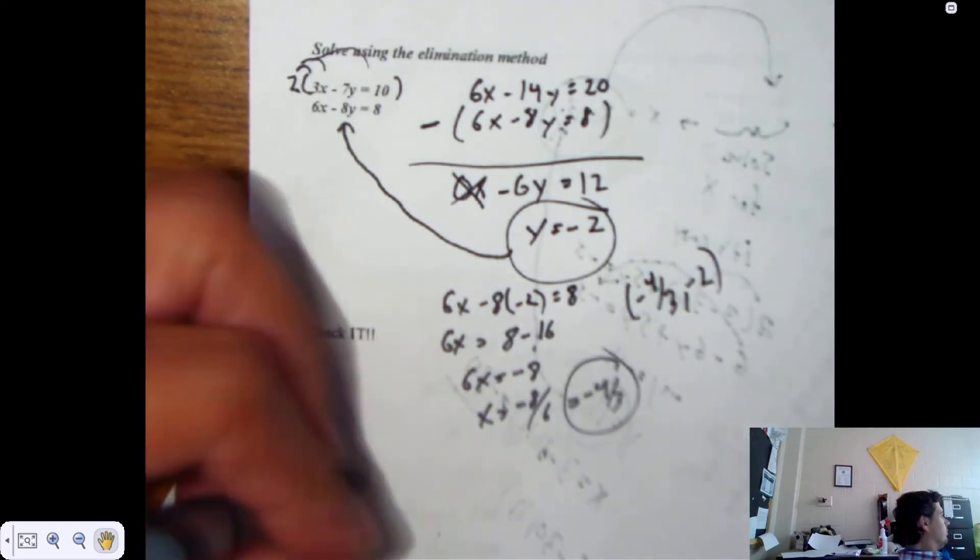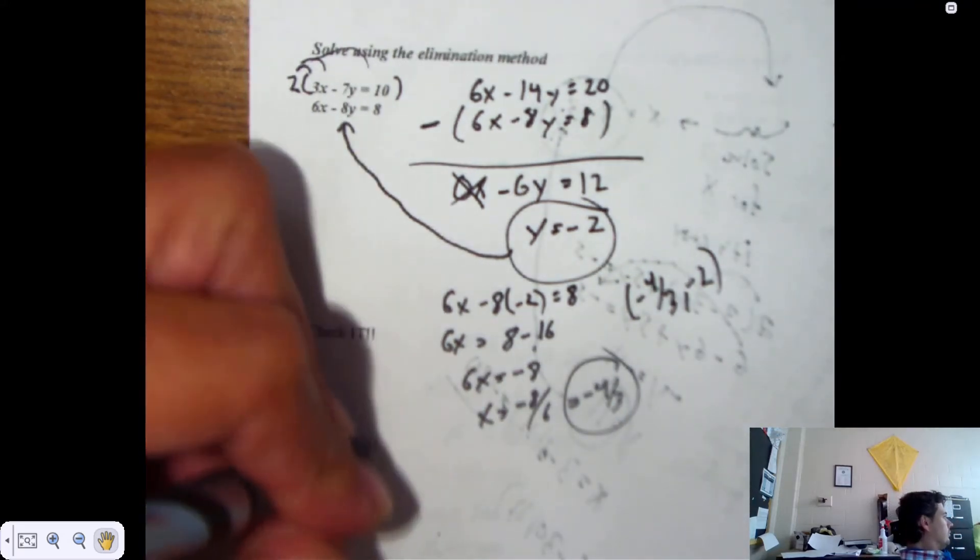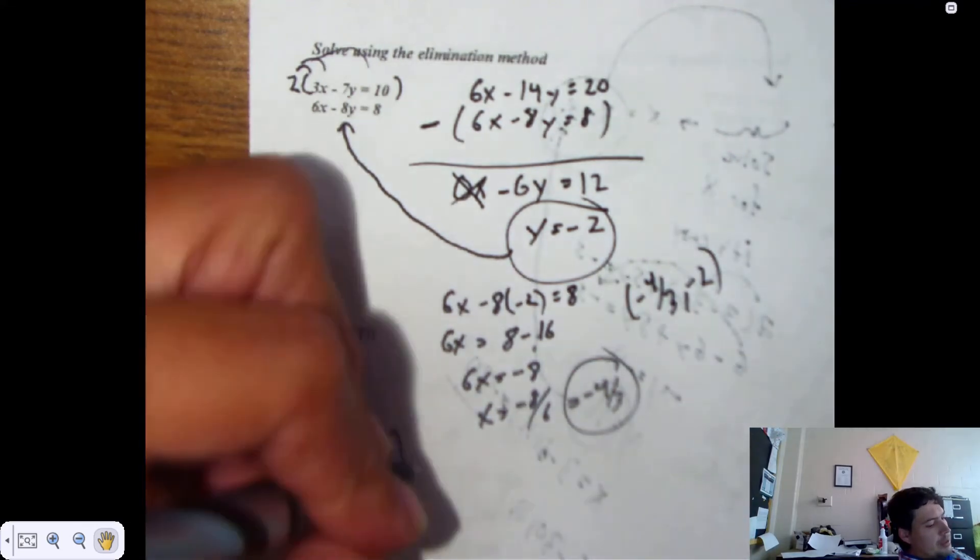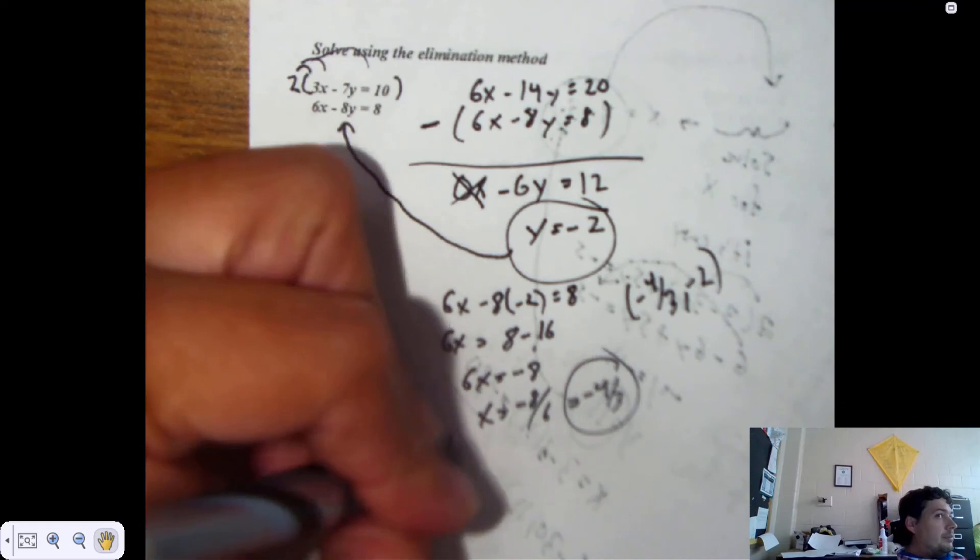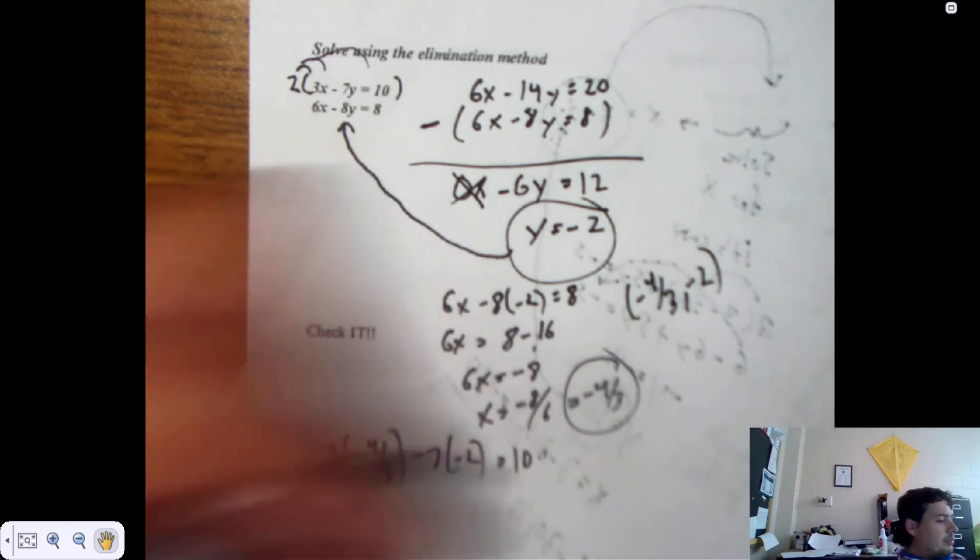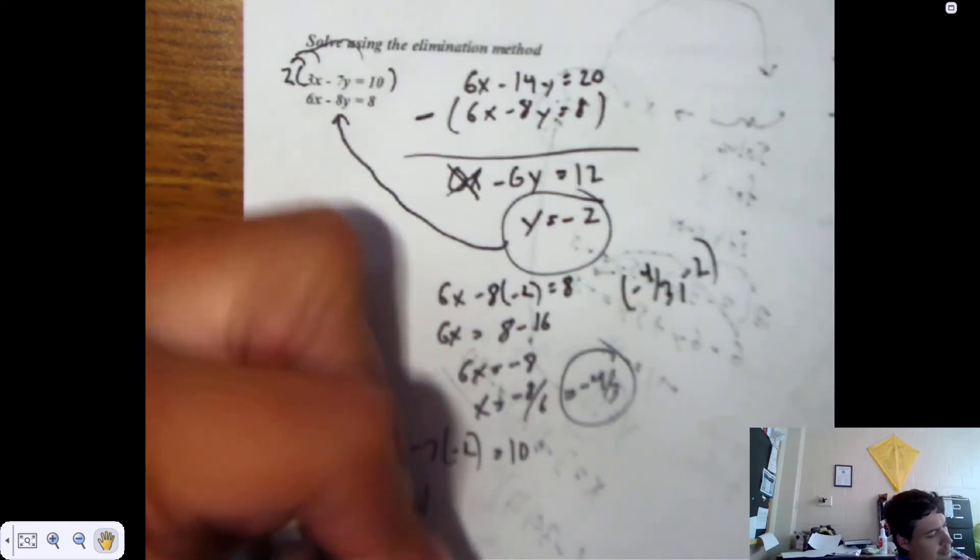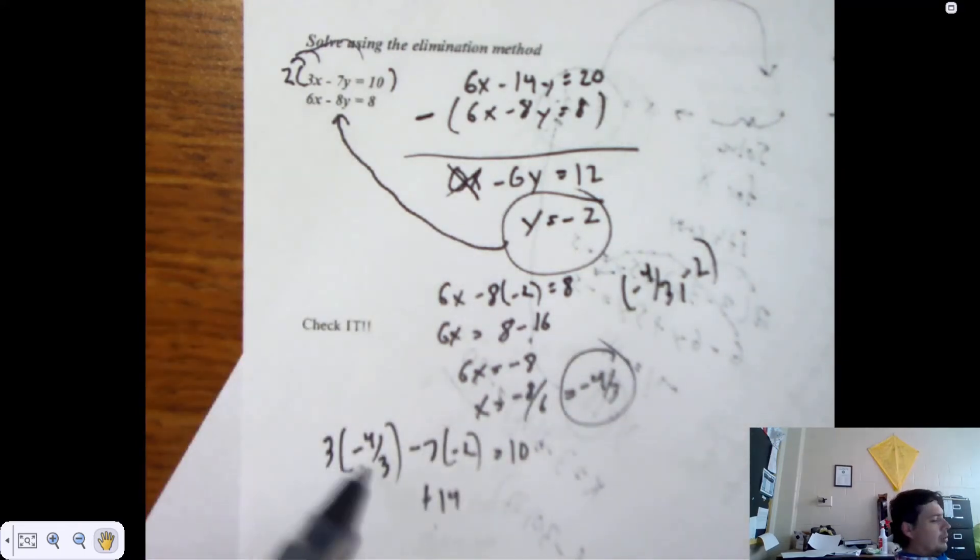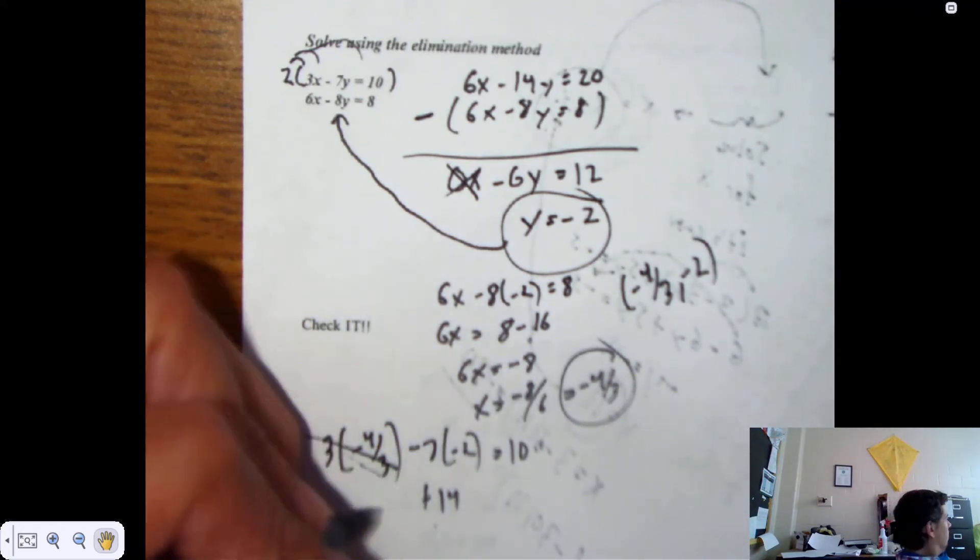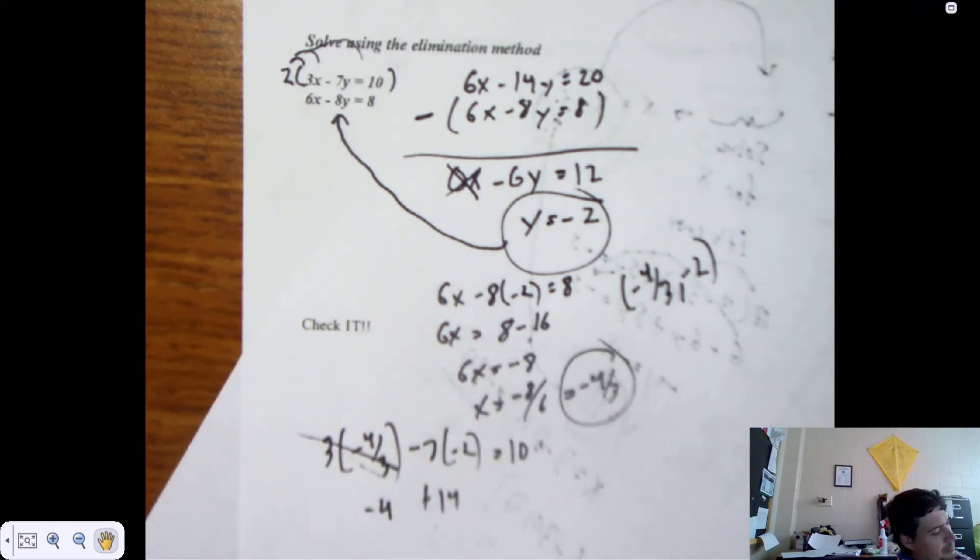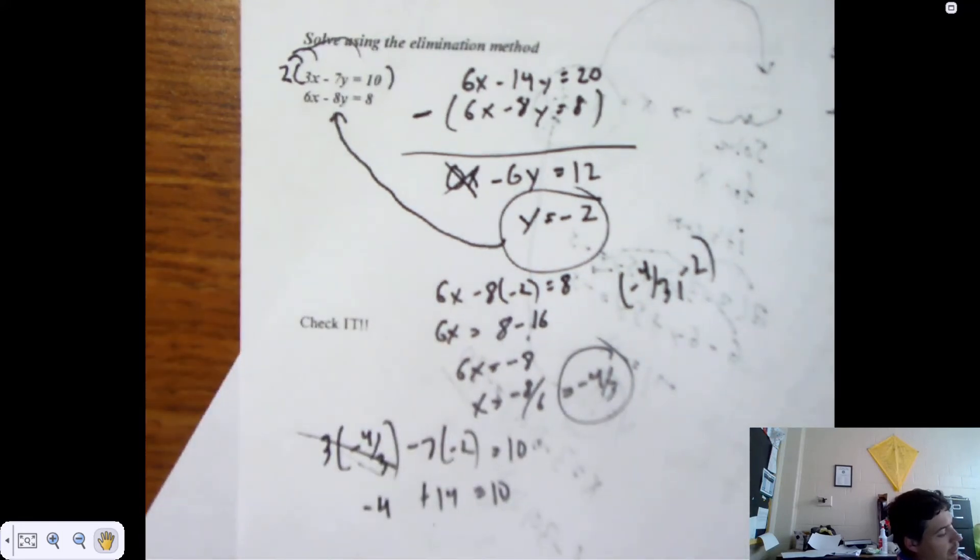So I've got that original equation, 3X minus 7Y. X is negative 4/3 minus 7Y. Y is negative 2. It's supposed to be 10. Yeah, there's a 14. What do the threes do? Negative 7 times negative 2. Threes cancel. It's that old fifth-grade math. And it's negative 4 plus 14, 10. Yeah, so it's true in the first one.